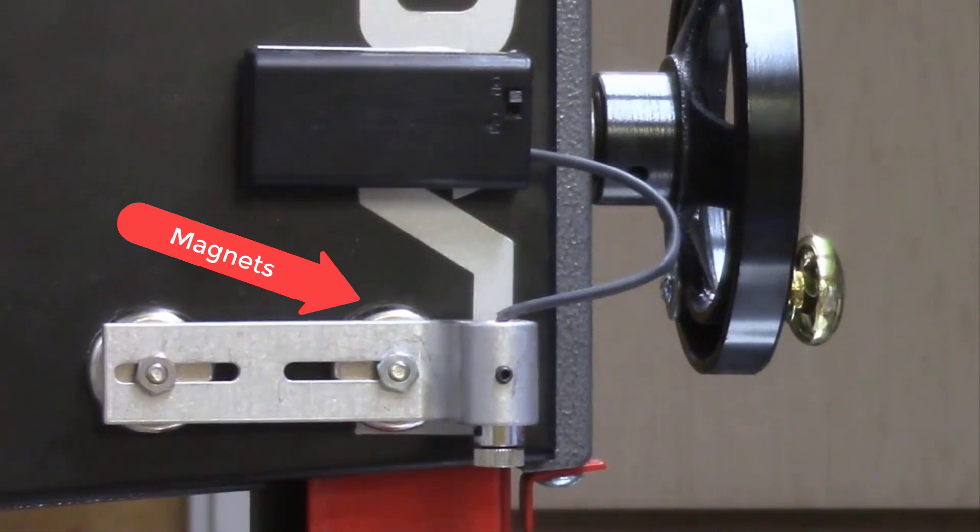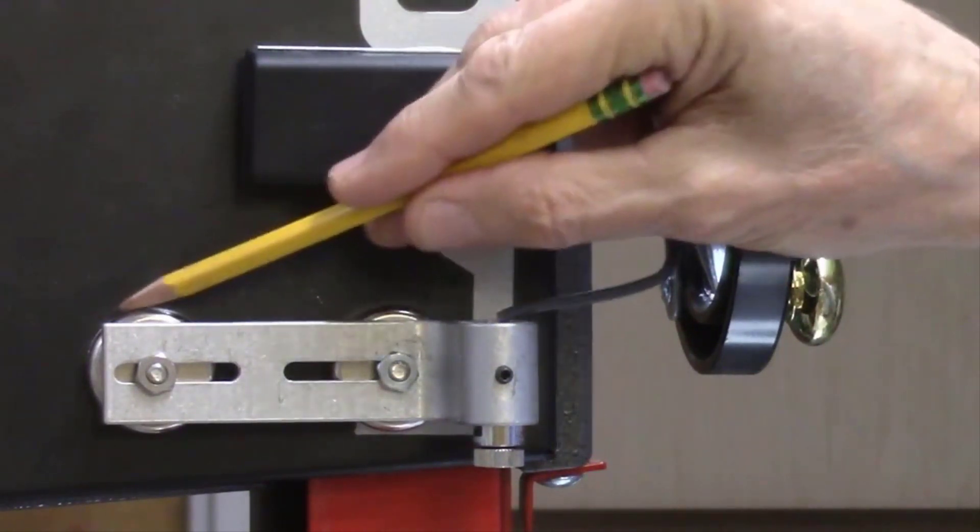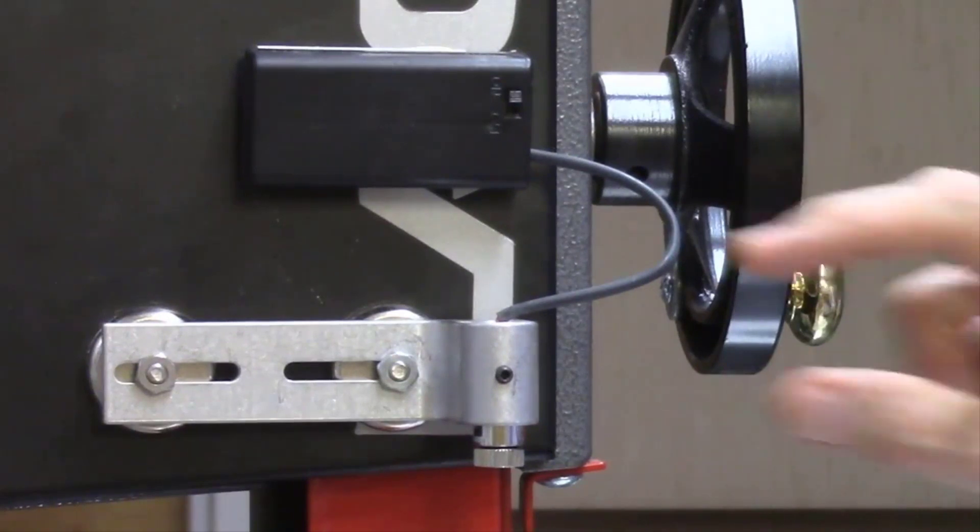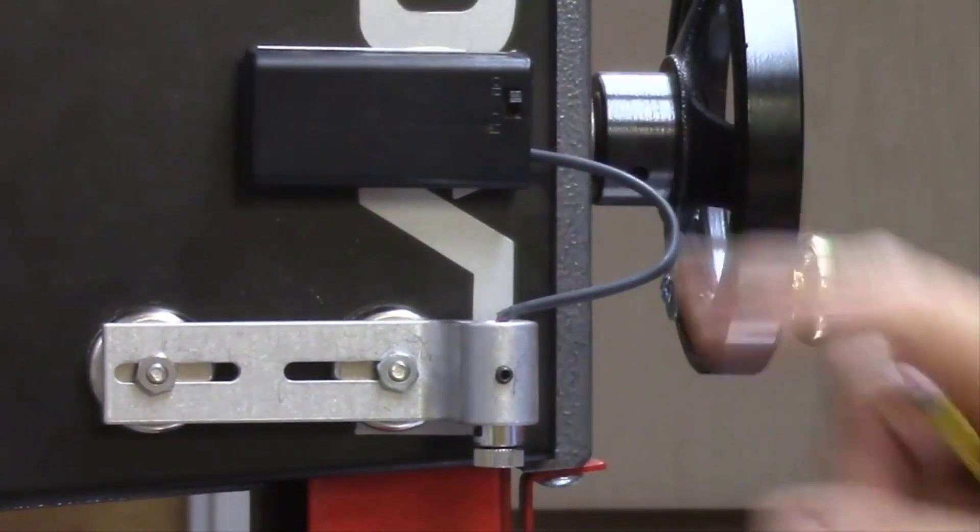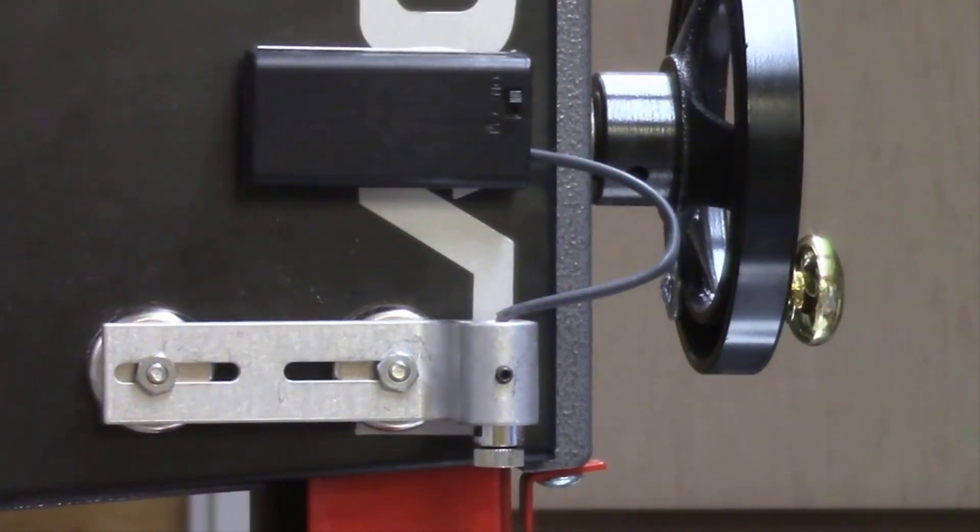The magnets hold the bandsaw laser on the wheel housing and it does not require the drilling of any mounting holes. However, if you desire, these magnets can be removed and the bracket laser can be mounted directly on the bandsaw housing, though this would require drilling holes.